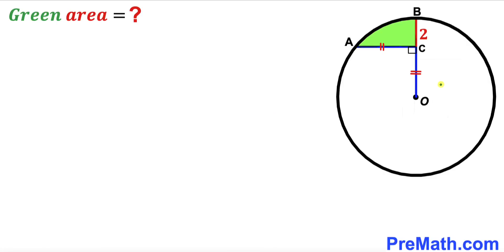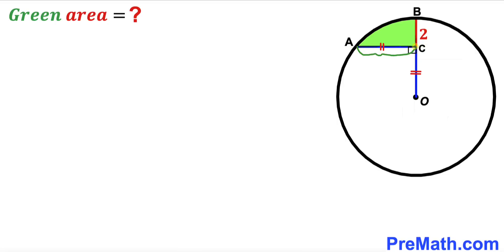Welcome to pre-math. In this video we have a circle with center O, where OB is the radius of the circle, AC is perpendicular, the tiny segment BC is 2 units, and segment AC equals segment OC. Our task is to calculate the area of the green shaded region.